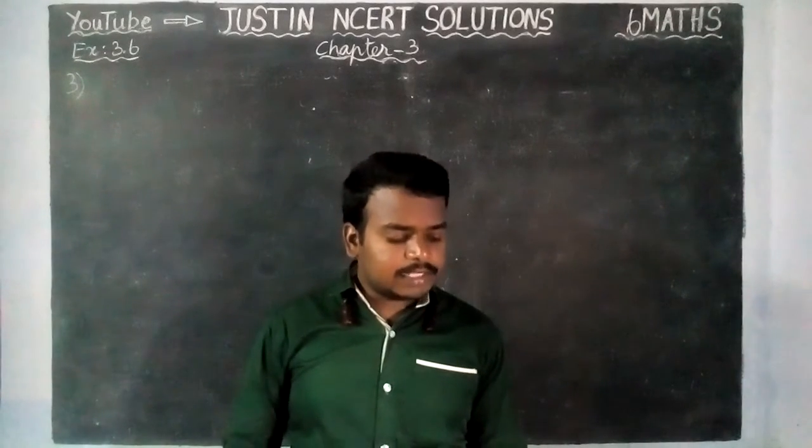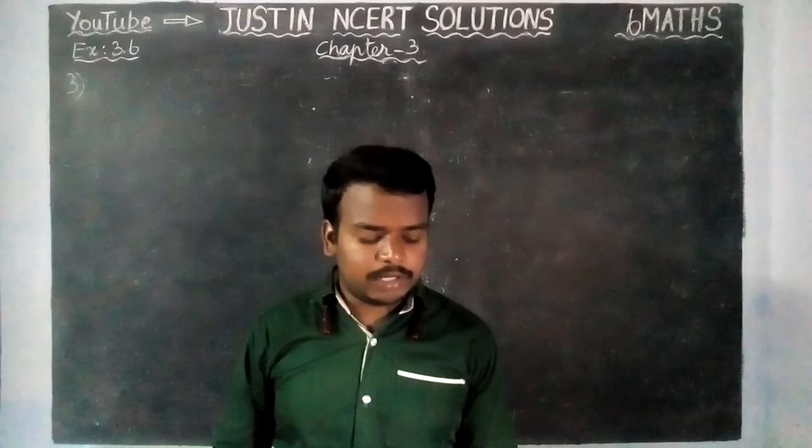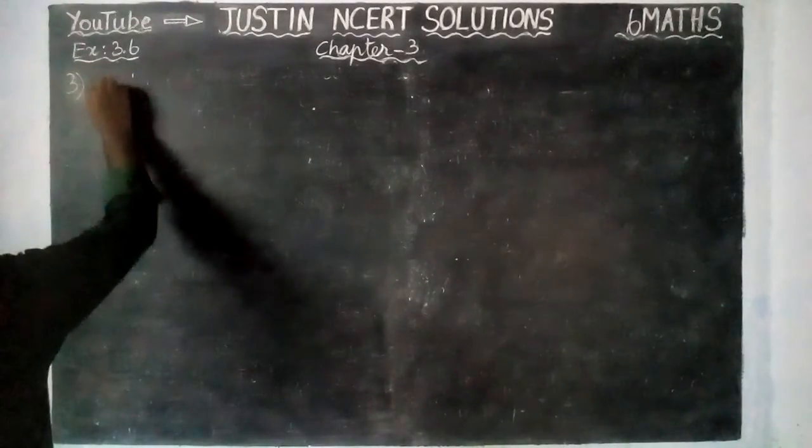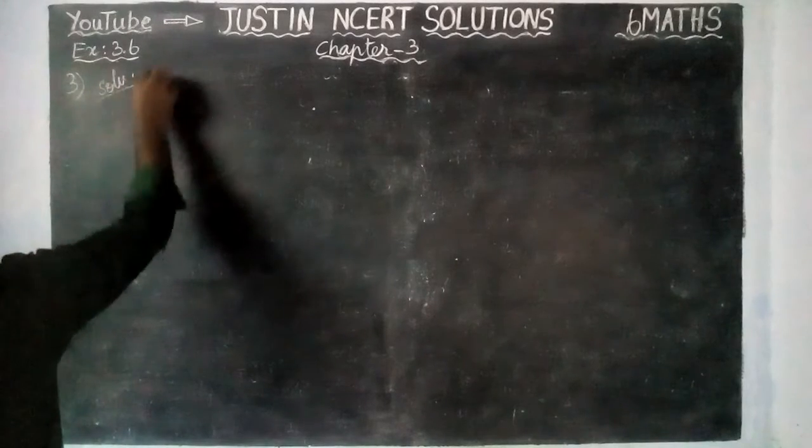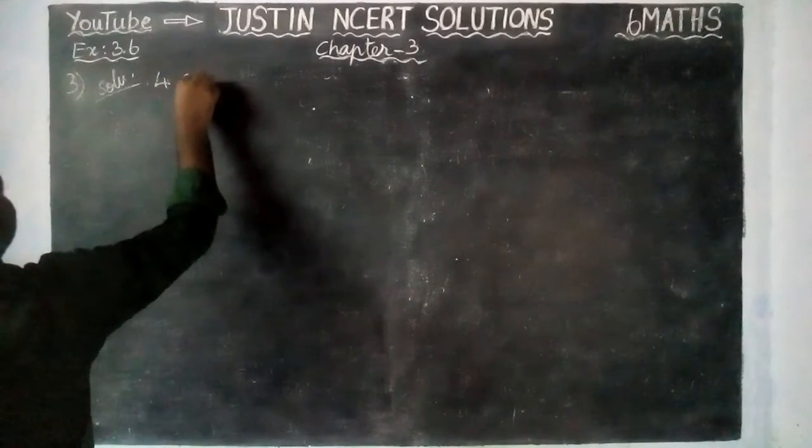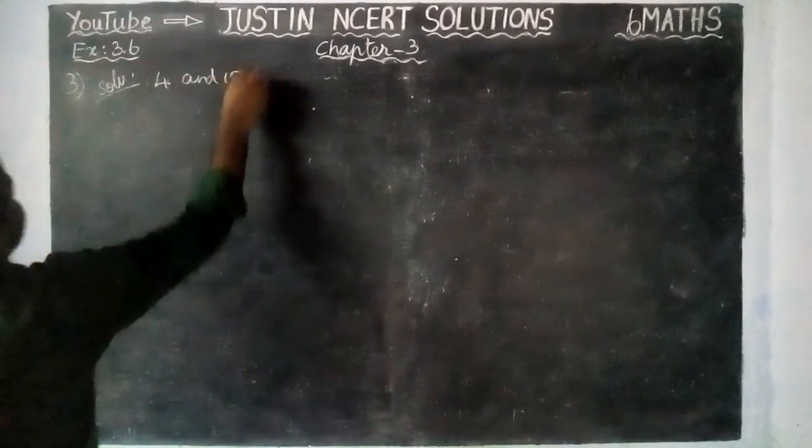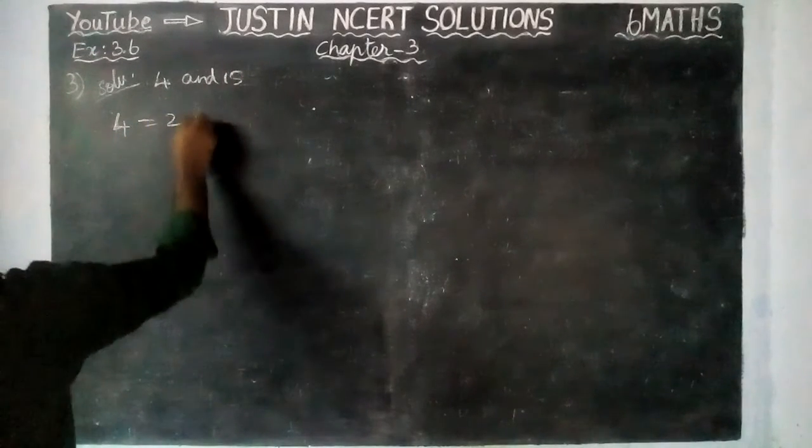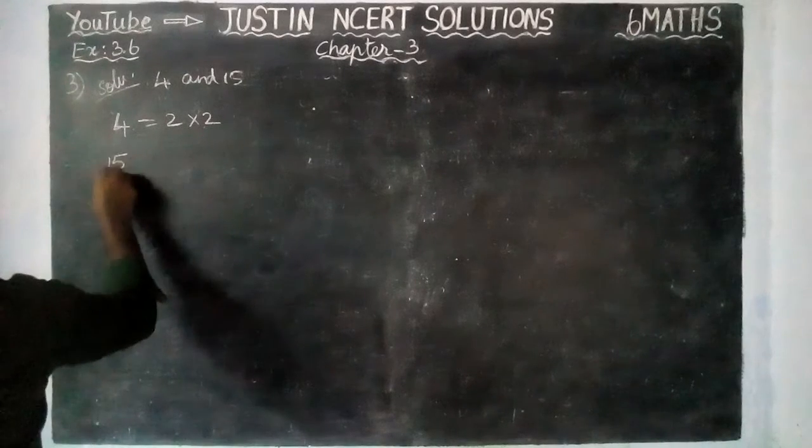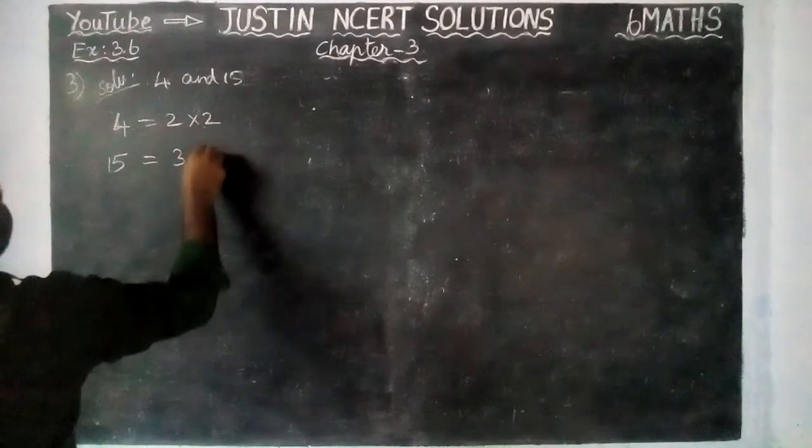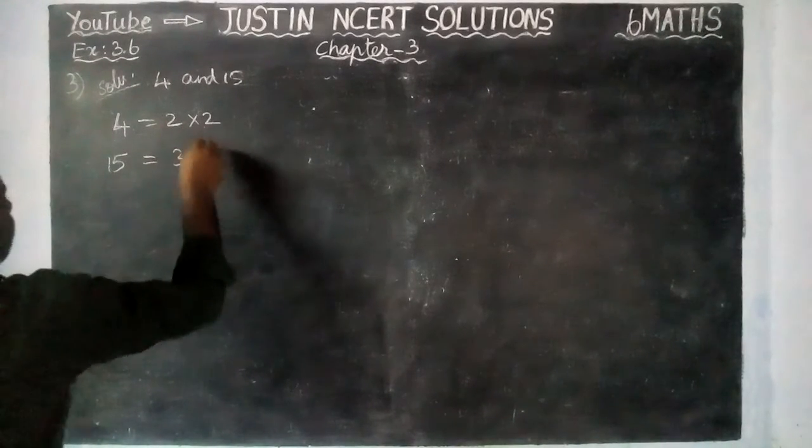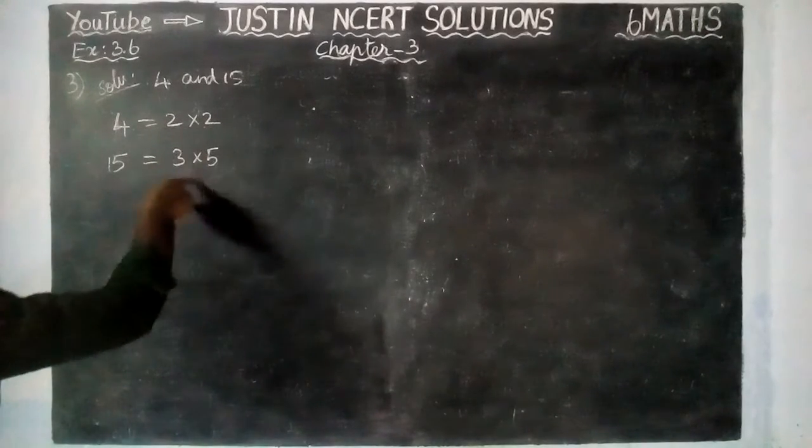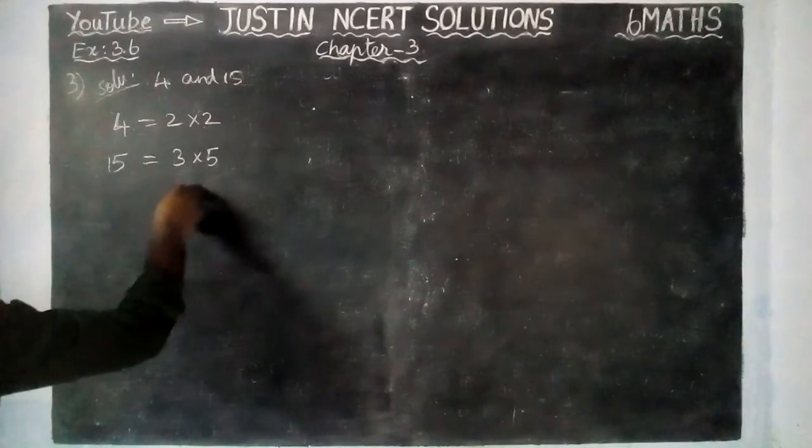The question is, HCF of co-prime numbers 4 and 15 was found as follows by factorization. HCF of 4 and 15. Here, they are given the factorization of 4 is equal to 2 into 2. Next, 15 is equal to 3 into 5. And here, we don't have any other common factor. Therefore, they said that HCF is equal to 0.